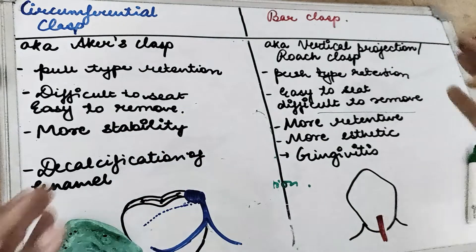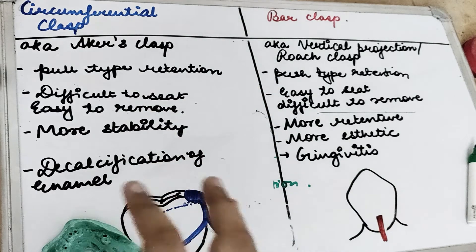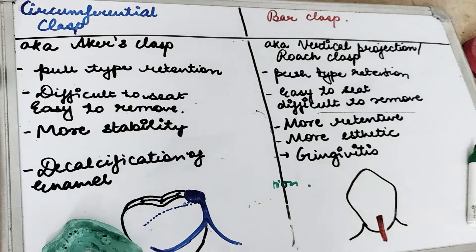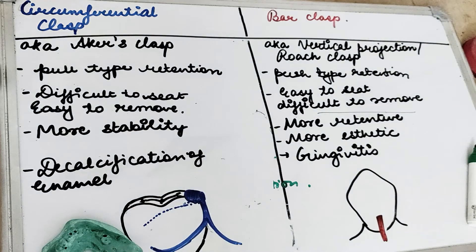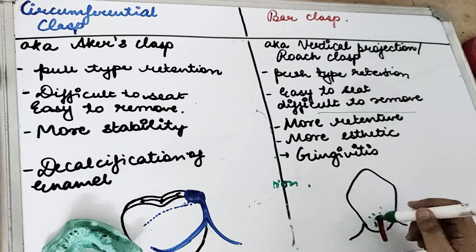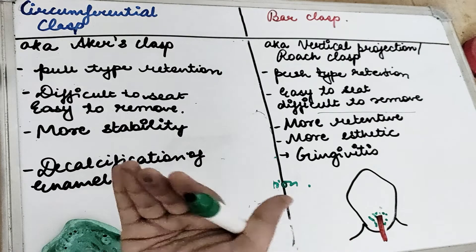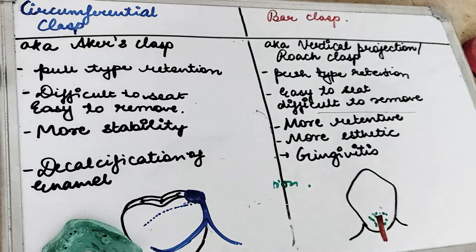Because the circumferential clasp encircles the tooth more than 180 degrees, more tooth surface is covered. This may lead to decalcification of the enamel and also enamel caries, because constantly there is a wire resting upon the tooth. So a circumferential clasp can often cause decalcification of the enamel or lead to caries.